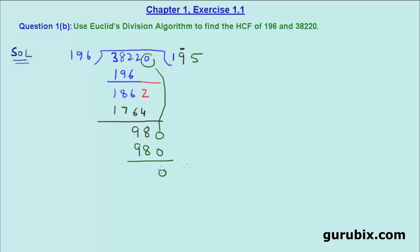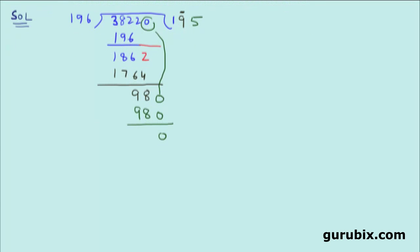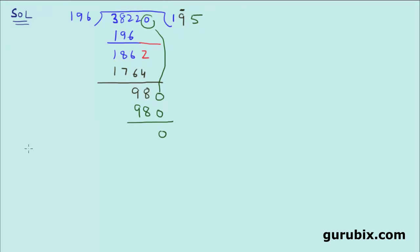Now we can write that 38,220 equals divisor 196 times quotient 195 plus remainder 0.